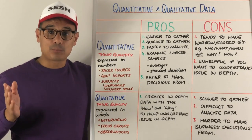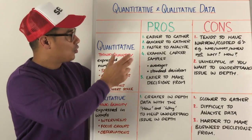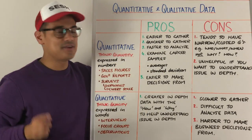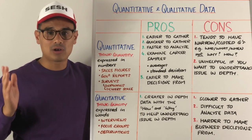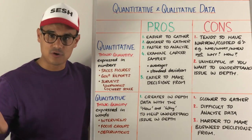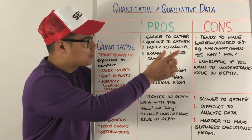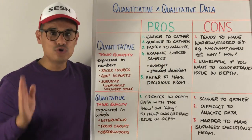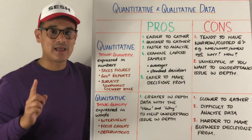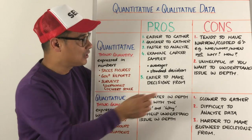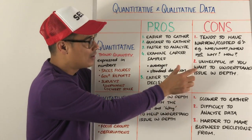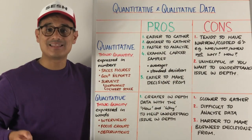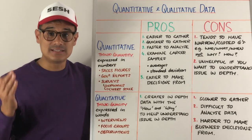The cons of using quantitative data: it tends to have a narrow or closed question focus. For that reason it focuses on the who, the what, the when — not the why and the how. Because it's not focused on the why and the how, it's unhelpful if you want to understand the issue in depth.